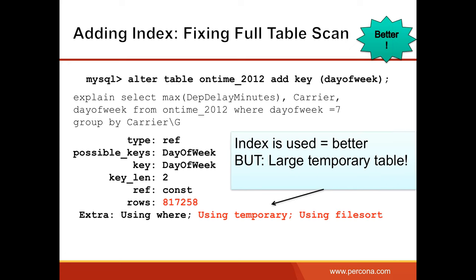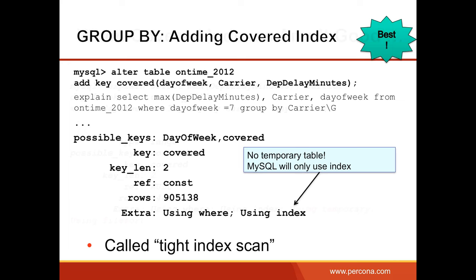In some conditions, a covered index won't work well. For example, with a range plus GROUP BY, MySQL may not avoid creating a temporary table. You may see 'Using index' but also 'Using temporary, Using filesort' in the Extra field — MySQL uses the index for filtering but still creates a temporary table and sorts it. That's not the best possible condition.